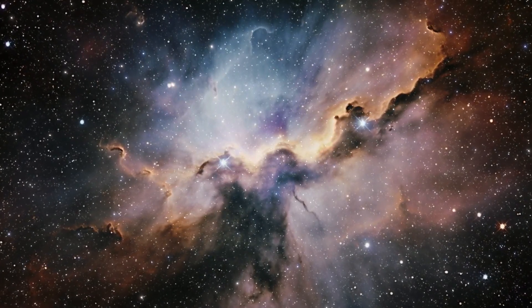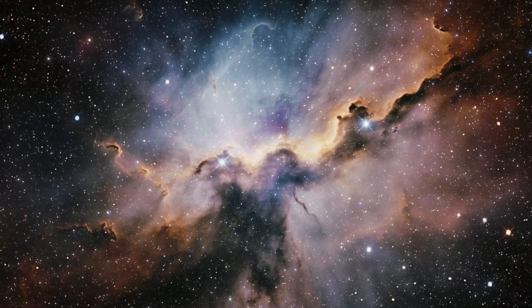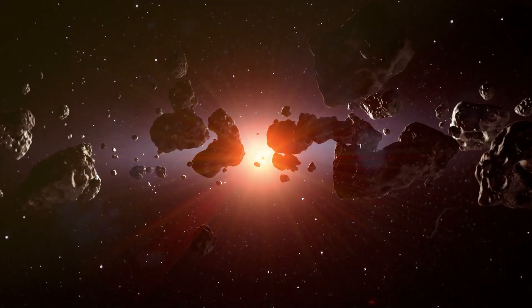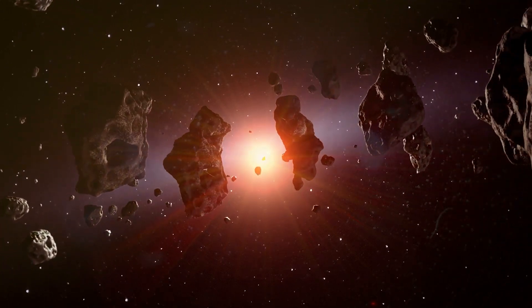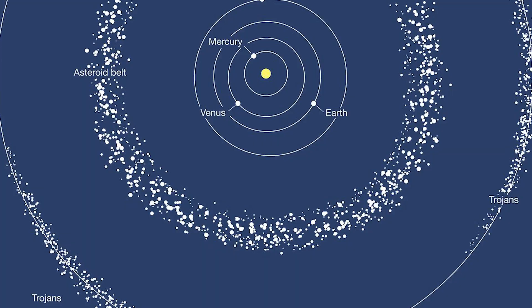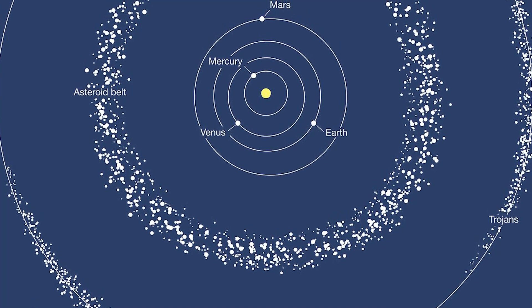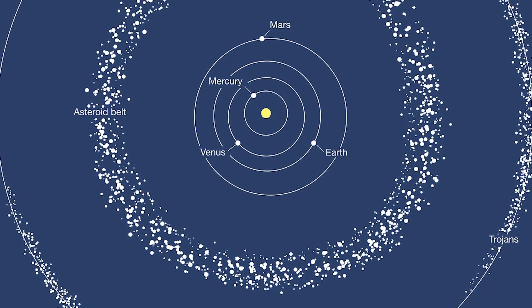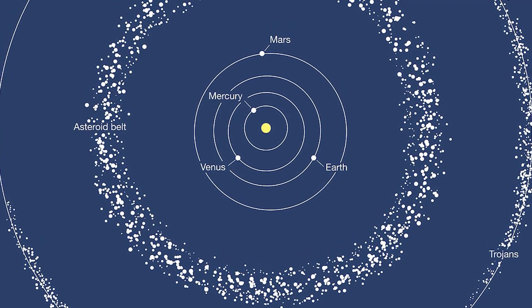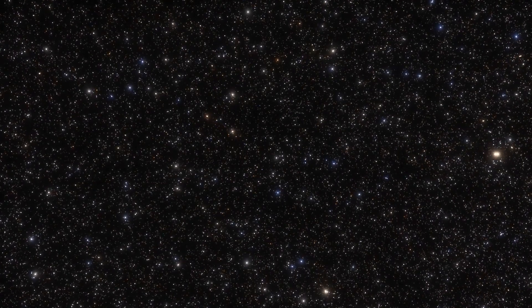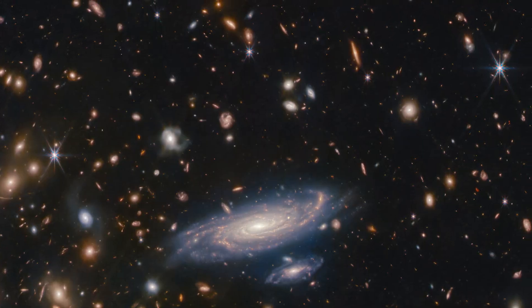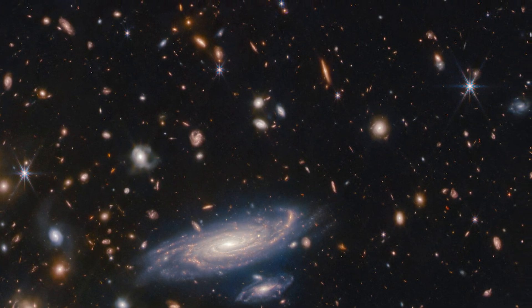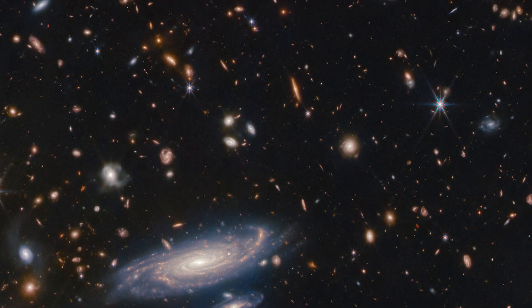In addition to its potential as a modeling tool, the Mandelbrot set has also been used to study the dynamics of celestial bodies. One example is the study of the motion of asteroids in the asteroid belt, a region of the solar system containing numerous small bodies that orbit the sun. The gravitational interactions between these bodies can be modeled using the Mandelbrot set, allowing researchers to better understand the dynamics of the asteroid belt and the behavior of individual asteroids. The Mandelbrot set has also been used to study the large-scale structure of the universe, as its fractal structure is similar to the distribution of matter on larger scales.